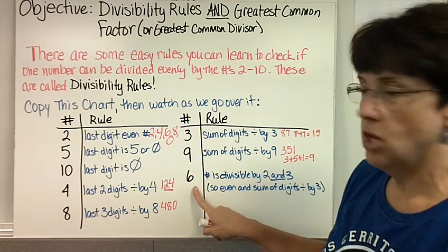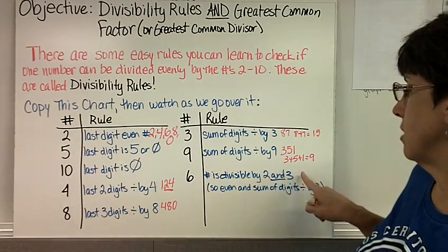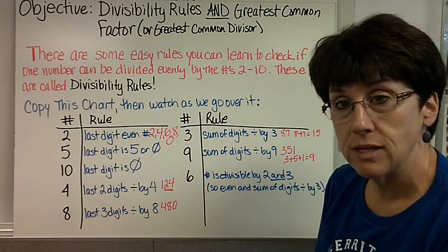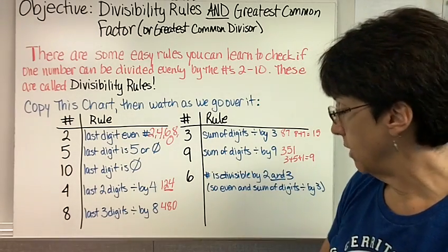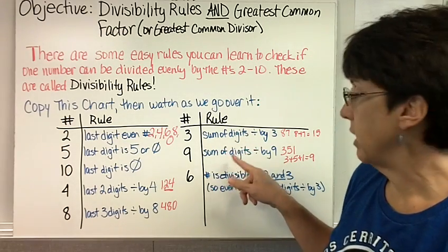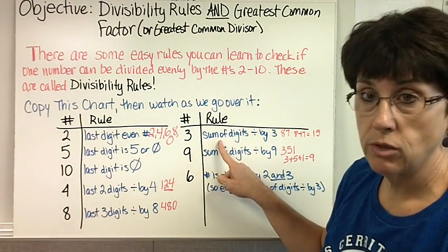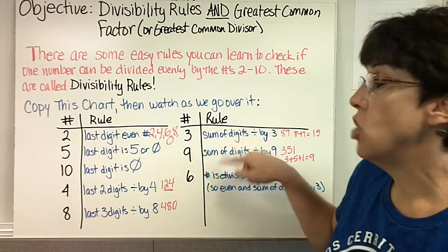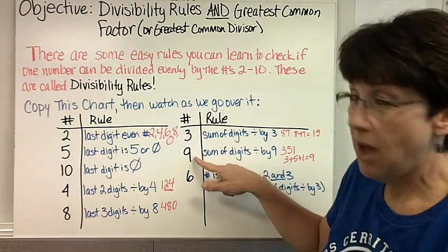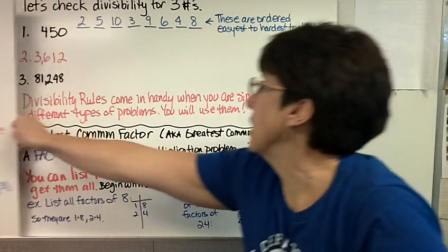Number 6 is also pretty easy. If your number is divisible by 2 and 3, then it's divisible by 6, which means it's an even number, and the sum of the digits is divisible by 3. One other thing I want to point out is every number that's divisible by 9 is also divisible by 3, because 3 goes into 9, but not the other way, because 9 does not go into 3.